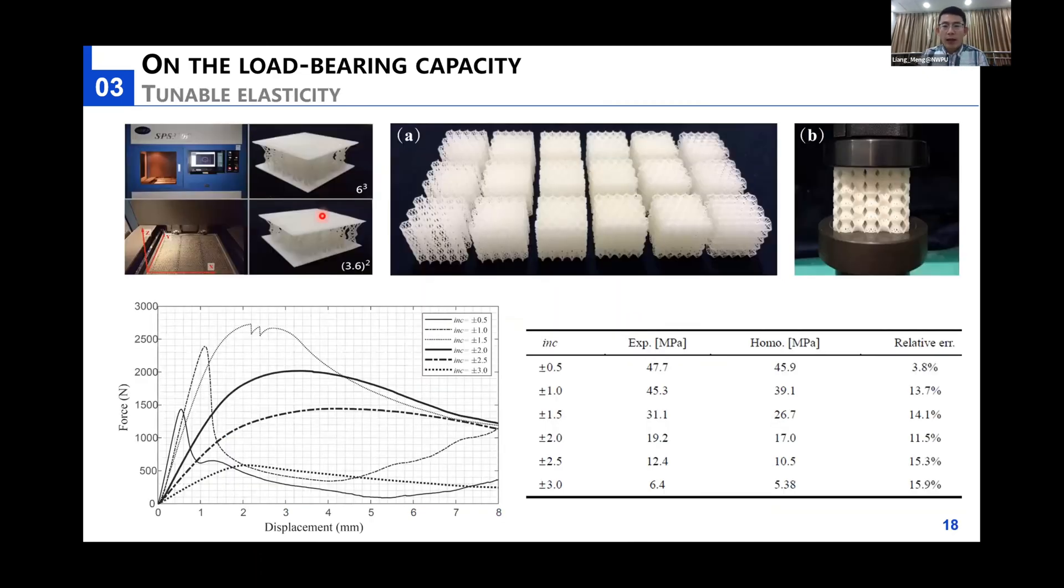Apart from that numerical analysis, we have also 3D printed a series of cubes composed of hyperbolic lattice units. From this load-displacement diagram, we can observe that the stiffness of different cubes varies in a large range. The measured stiffness shown in this column corresponds well with the numerical ones from the homogenization approach.